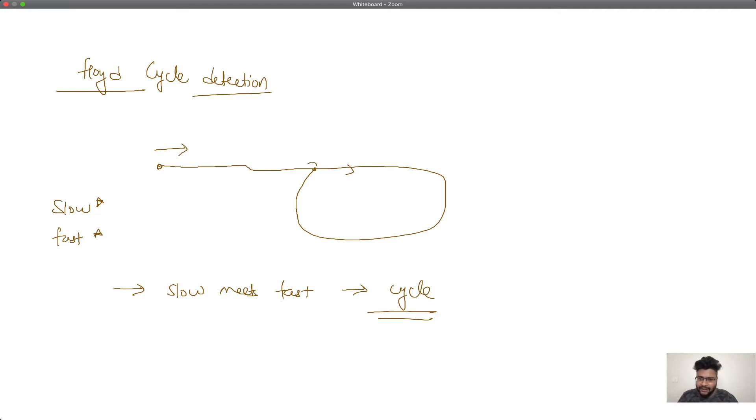There's one more variation of this problem where we need to find the entry point, the point from where the loop starts. There's an algorithm for this. Let's suppose I name this distance x, and my slow and fast pointer are meeting at this position. From the meeting point M to point C, the distance is z, and the remaining distance is y.